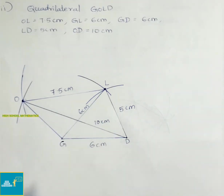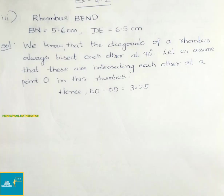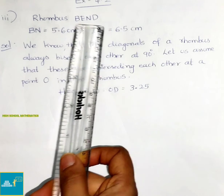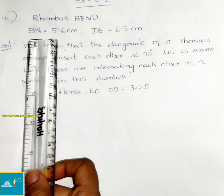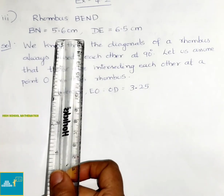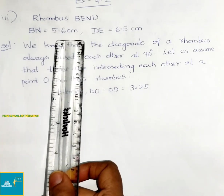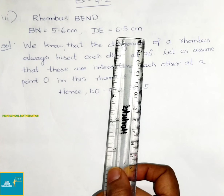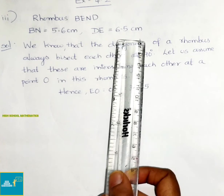GOLD is the required quadrilateral. Now question number 3: Construct a rhombus BEND where BN equals 5.6 cm and DE equals 6.5 cm.